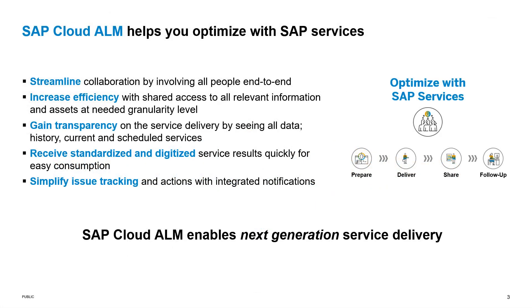SAP Cloud ALM helps you optimize with SAP services by doing the following. It streamlines collaboration by involving all people end-to-end. It increases efficiency with shared access to all relevant information. You're able to gain transparency on service deliveries by seeing all data, such as past and current scheduled services. You can receive standardized and digitized service results more quickly for easy consumption. And lastly, users can simplify issue tracking and actions with integrated notifications.